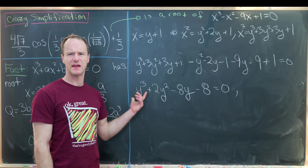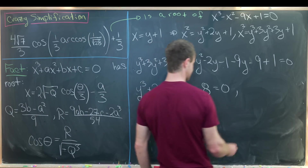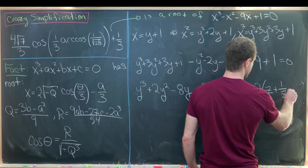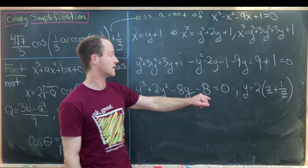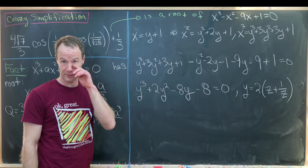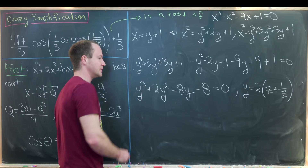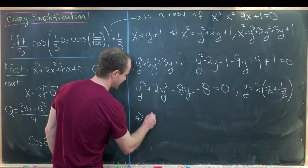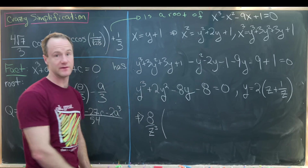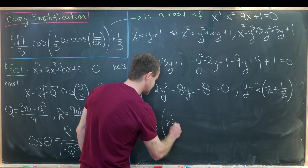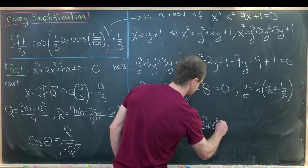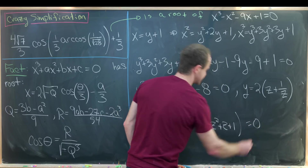Motivated by getting equal coefficients, we make the substitution y equals 2 times z plus one over z. Computing y squared and y cubed using the binomial formula and substituting in, you can factor out eight over z cubed to obtain z to the sixth plus z to the fifth plus z to the fourth plus z cubed plus z squared plus z plus one equals zero.